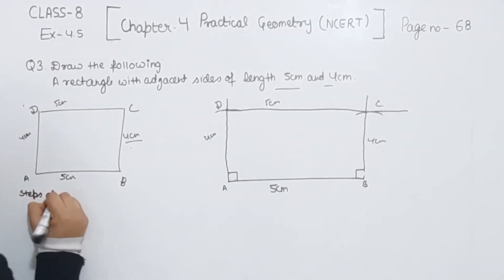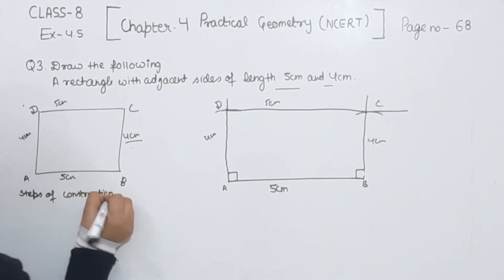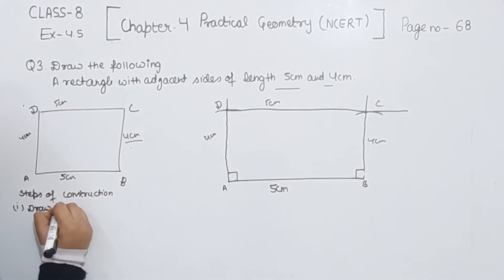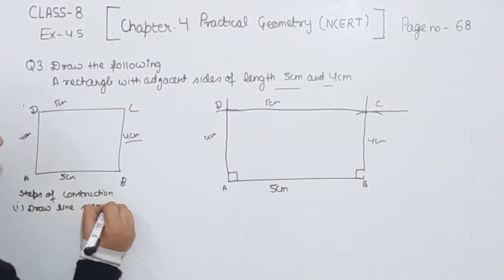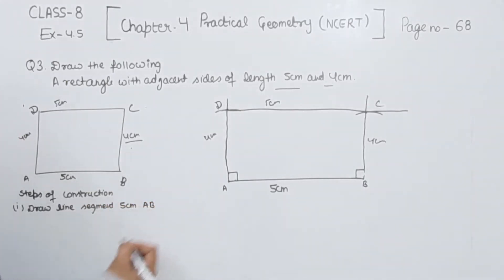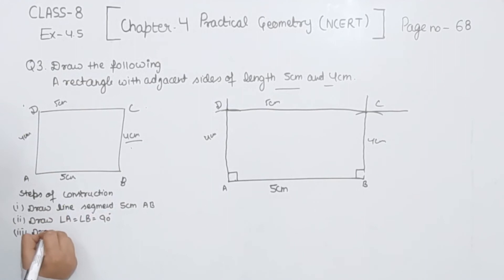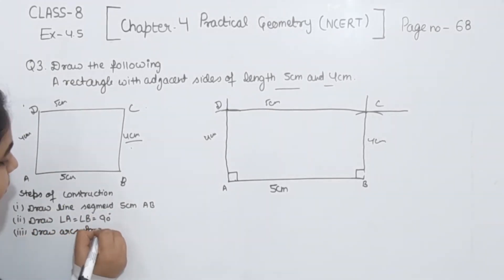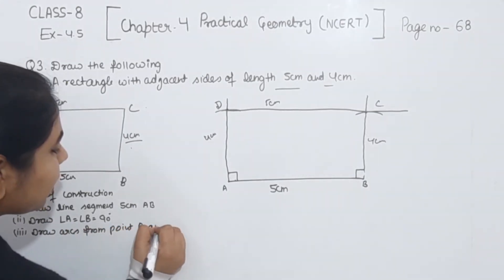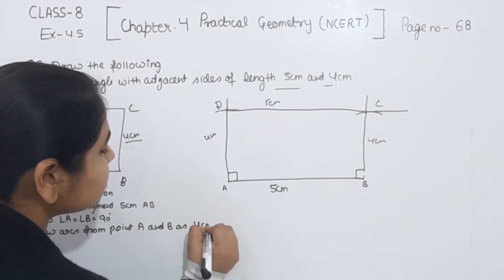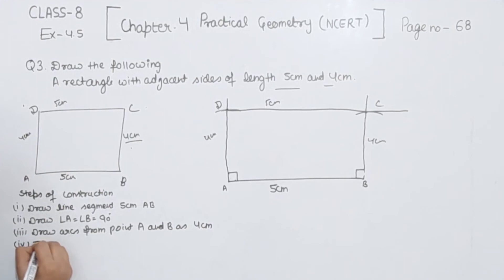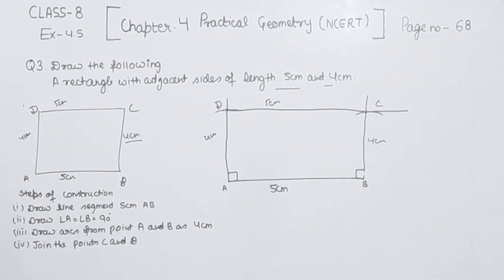Now we are going to write the steps of construction. First, draw line segment AB equal to 5 cm. Next, draw angle A equal to angle B equal to 90 degrees. Now draw arcs from point A and point B with a radius of 4 cm to get points D and C. Finally, join the points C and D. This is the required rectangle with adjacent sides of length 5 cm and 4 cm.